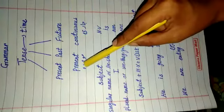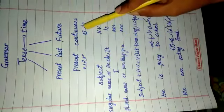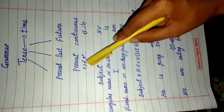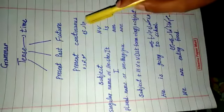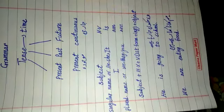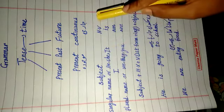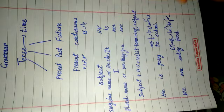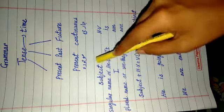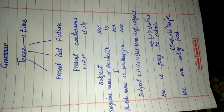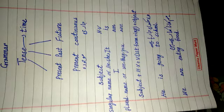Today our topic is present continuous tense. Present means mujuda and continuous means jari. It shows the happening or continuity of some action. Present continuous means mujuda time, and it shows the action which is happening or the continuity of action.